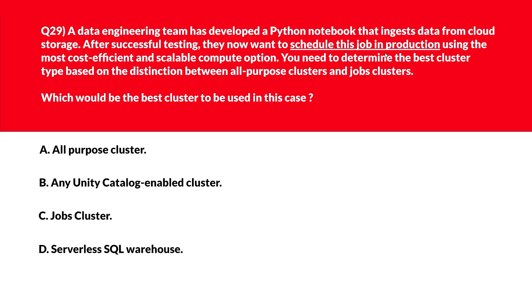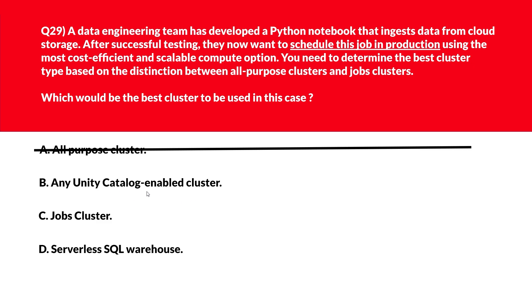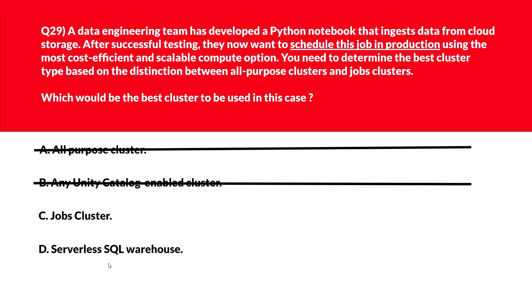All right, now let's look at this question — this is about scheduling a job in production using the most cost-efficient and scalable compute option. Option A says all-purpose cluster. All-purpose cluster is optimized for interactive development, not scheduled production workloads — incorrect. Option B says any Unity Catalog enabled cluster. Unity Catalog enabled cluster defines access control, not execution mode — wrong answer. Option C says jobs cluster. Jobs cluster is designed for scheduled, automated, and cost-efficient job execution — this meets the requirement. Option D says serverless SQL warehouse. Serverless SQL warehouse is optimized for SQL workloads, not Python-based data ingestion. Option C, jobs cluster, is the right answer.